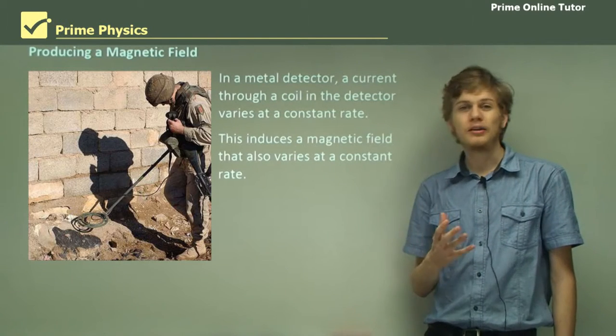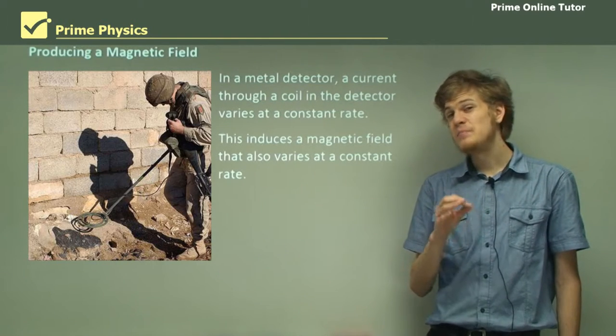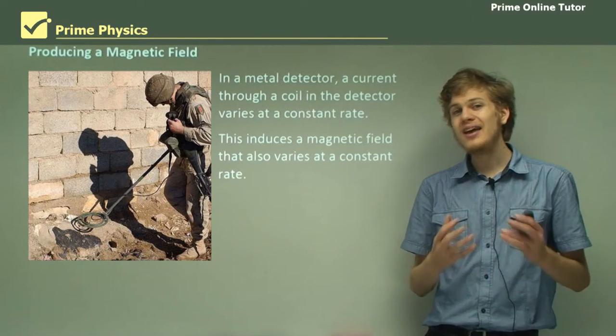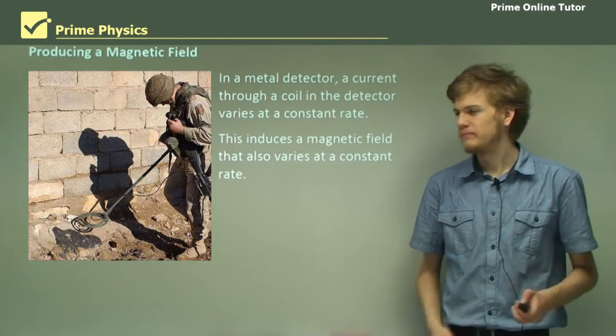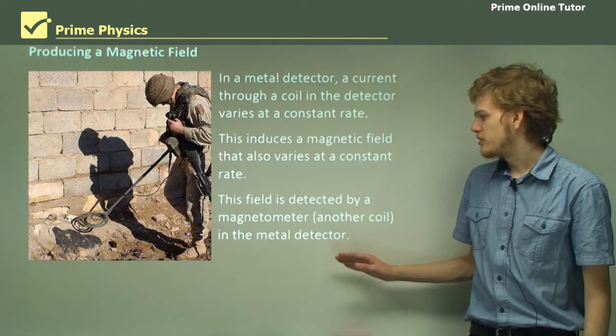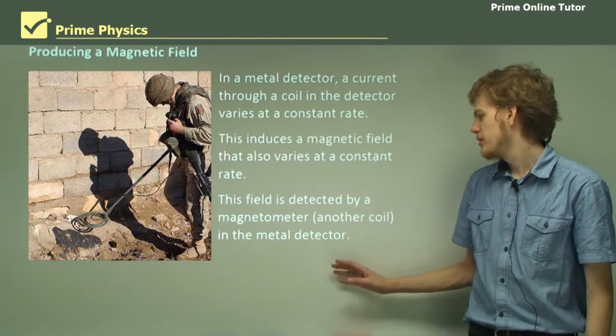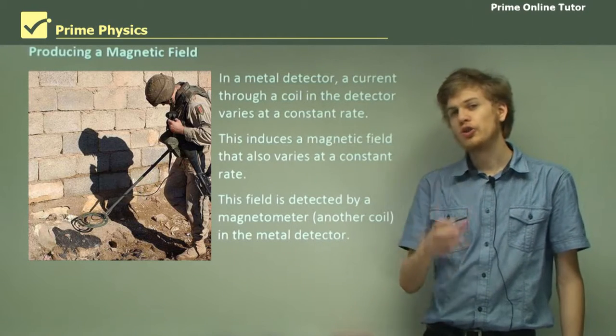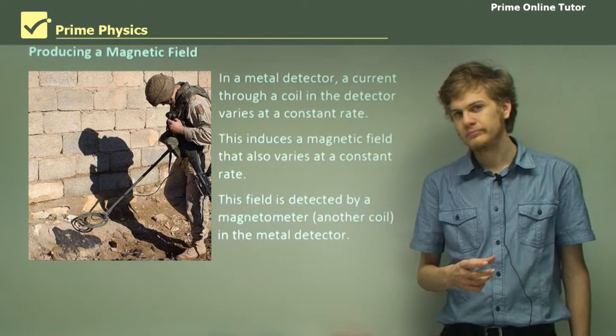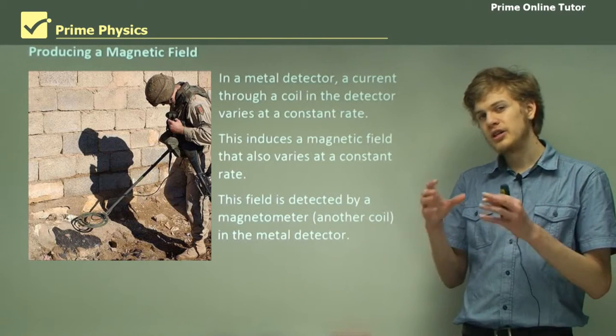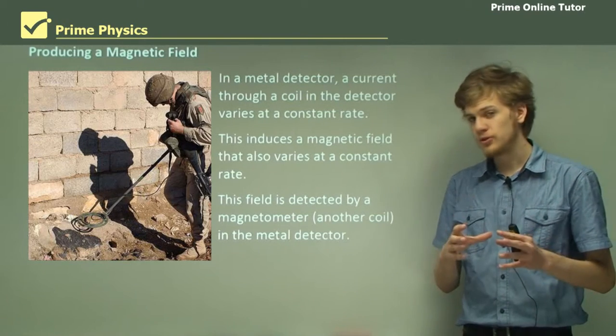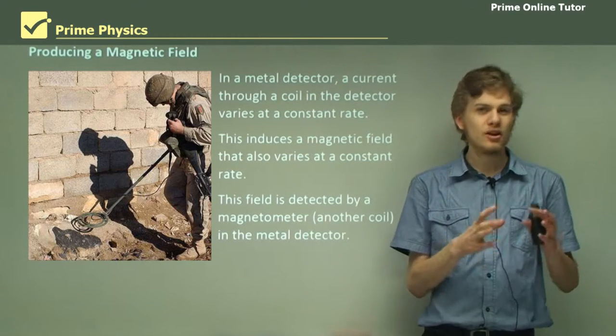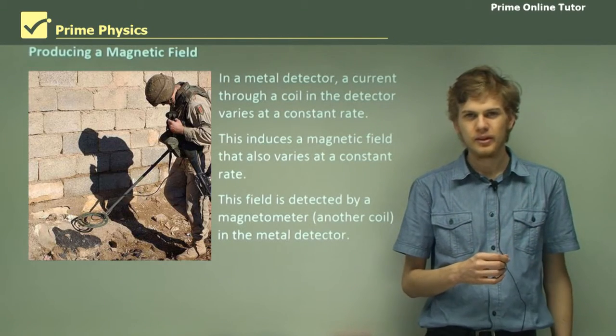Now we have a changing magnetic field, and any metal object within this magnetic field will have eddy currents induced inside it. The field is detected by a magnetometer, which is another coil in the metal detector. Usually these coils are right on top of each other. The changing magnetic field from the first coil produces a changing electric current in the second coil.